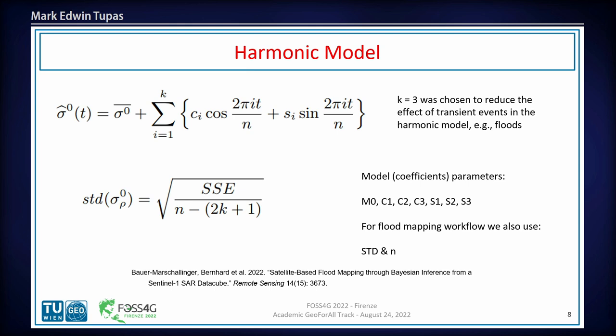The model we use to model seasonal variation is based on the harmonic model. We compute Fourier coefficients — there's no general trend; we assume a static seasonal model. We generate M0 and the cosine and sine coefficients of the harmonic model. We also compute the standard deviation to get the probability distribution, as well as the number of sample points used when computing this particular model for our workflow.